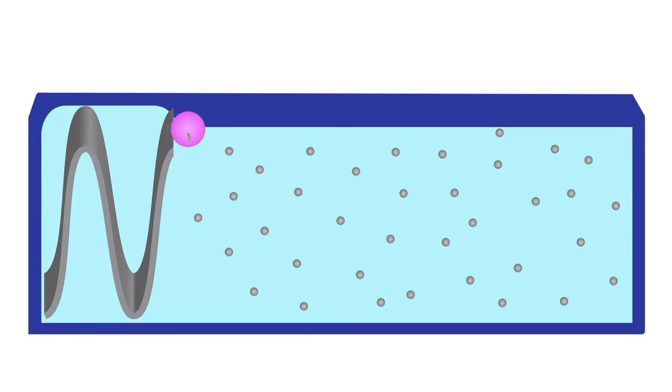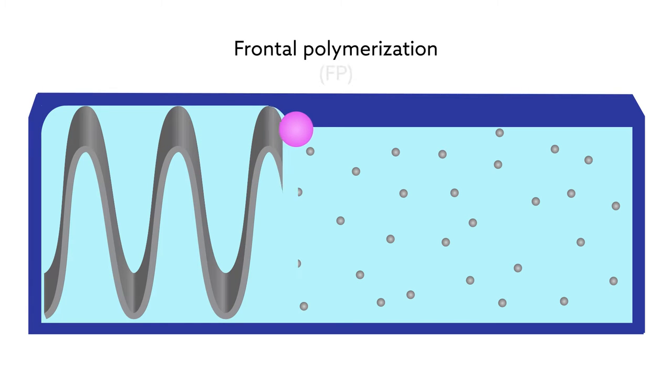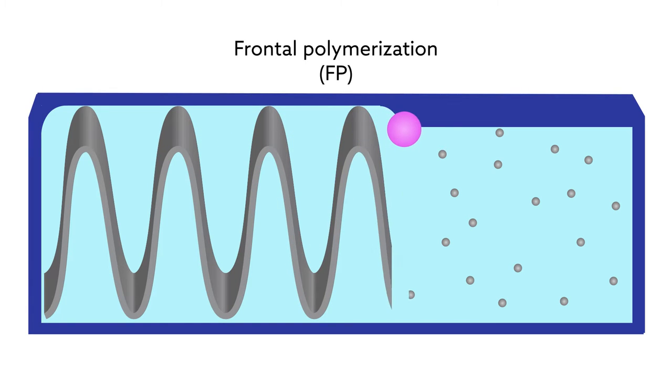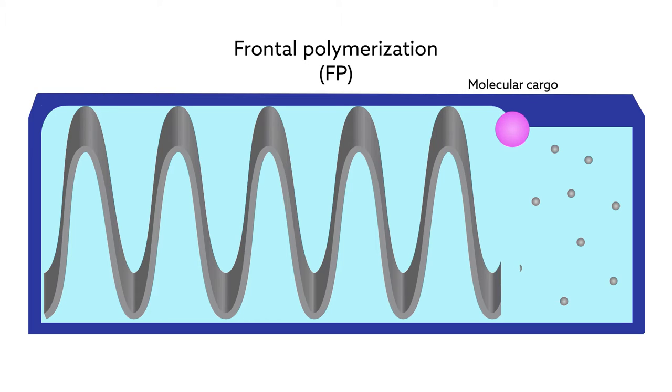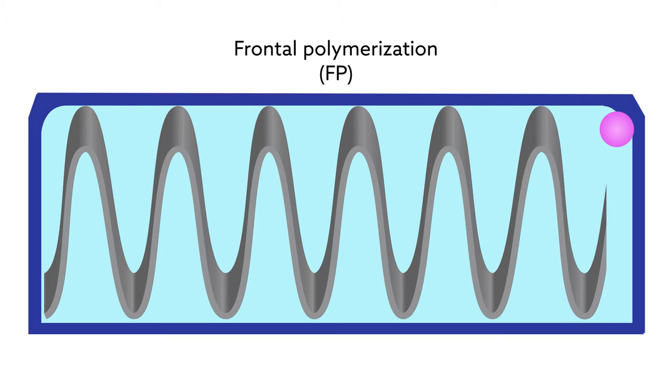In this study, researchers used a technique called frontal polymerization, or FP, to generate a wave that could push molecular cargo across the surface of a gel, like a conveyor belt.